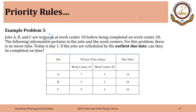The following information pertains to the jobs and the work centers. For this problem there is no move time. Today is day 1. Job A requires seven days at work center 10 and three days at work center 20. Job B has a processing time of five at work center 10 and two at work center 20. Job C has nine at work center 10 and four days at work center 20.